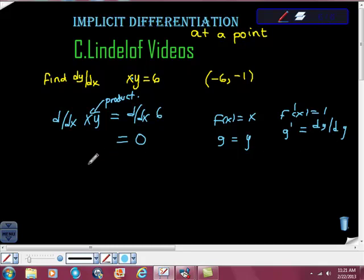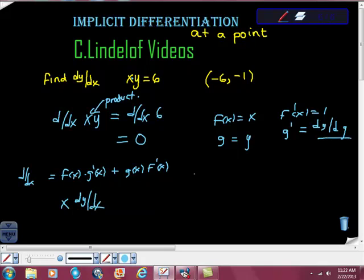Now I'm going to use the product rule. The product rule says we're going to take f of x times g prime at x plus g of x times f prime at x. So f of x is x. The first derivative of that is dy/dx. Plus, g of x is equal to y. Remember f prime at x is equal to 1. That equals 0.